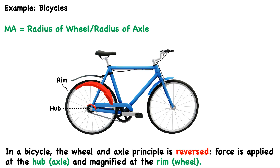The hub drives the larger rim, which is essentially the wheel of the bicycle. This magnifies the rotational motion, allowing the bicycle to cover more ground per turn. The mechanical advantage is still the radius of the wheel divided by the radius of the axle. However, in this case it does not translate to an increase in force, but to an increase in rotational distance and velocity, making it more efficient and allowing for greater speeds.